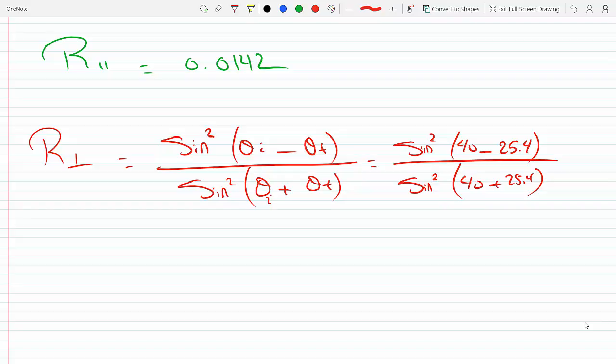This equals sin²(40 - 25.4) divided by sin²(40 + 25.4). You can just do it and then square the whole thing if it's easier. These are the reflection coefficient equations from chapter 4. Here we get 0.0769.